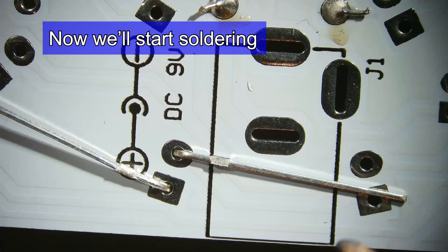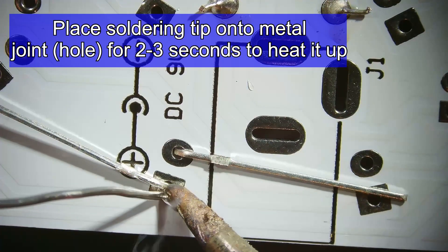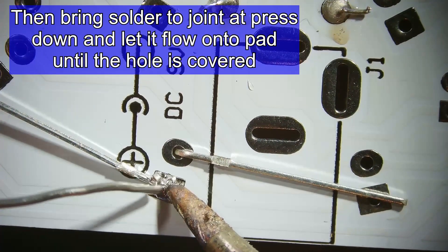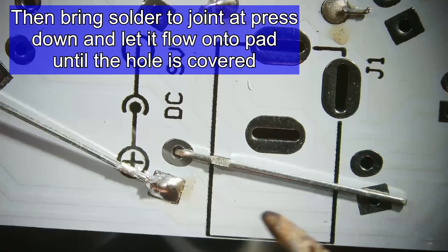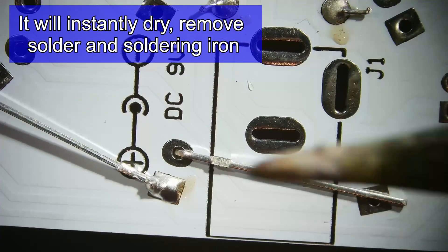We're going to first take our soldering pen and hold it to this square pad. Do it for two to three seconds, then touch the solder to the pad and it will just flow onto it like that.